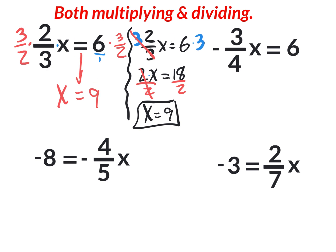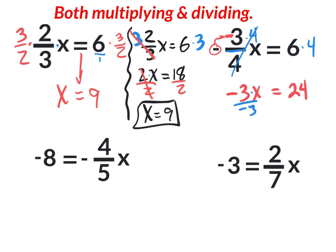Let's try the next one: negative three-fourths x equals six. The negative belongs to the numerator only — never the denominator, and definitely not both, because negative divided by negative is positive and that would change your answer. I prefer to move the negative and make it part of the three: negative three on top. To get rid of divided by four, multiply by four on top and on both sides. Six times four is twenty-four. Now the problem is negative three x equals twenty-four. Divide by negative three on both sides: x equals negative eight.